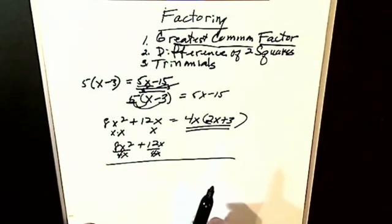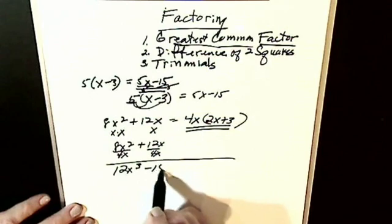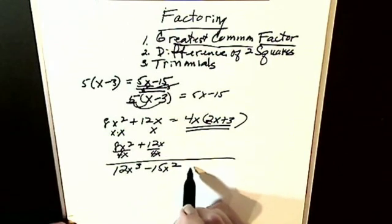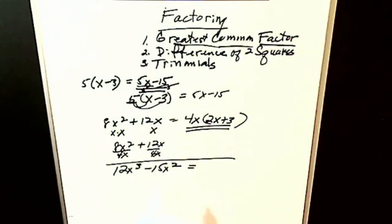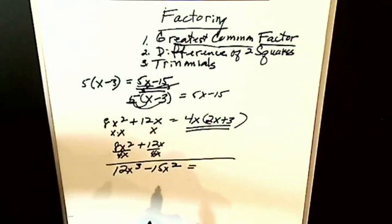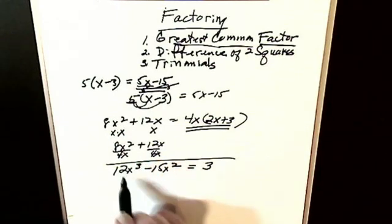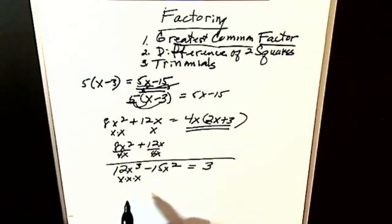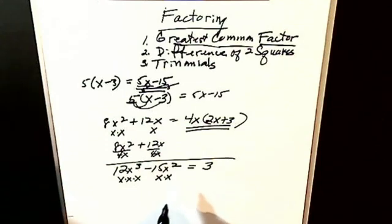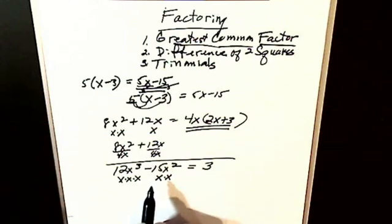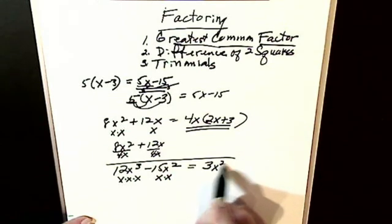Alright, let's try another one: 12x³ minus 15x². I'm looking for a number that will divide evenly into both terms. 12 is too big, so I come down — hopefully you're going to see 3. Three will go into both, so I'm going to factor out a 3. I look at my letters: x³ means I've got three x's here, x² means I've got two x's here. What is the most x's I can take out of each term? I'd love to take three out, but three doesn't exist in the second term. I can take two out of each term, so I'm going to factor out x².